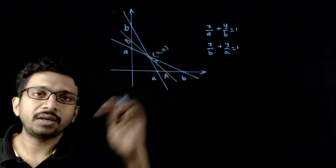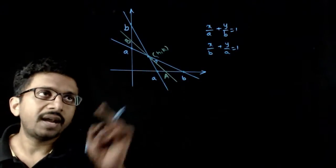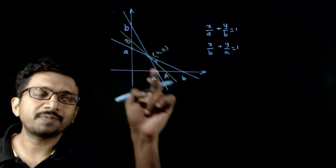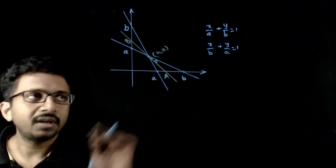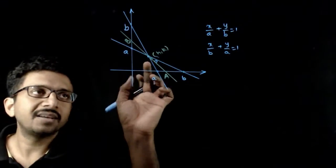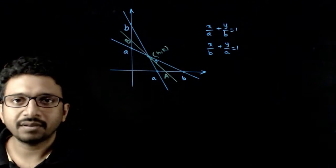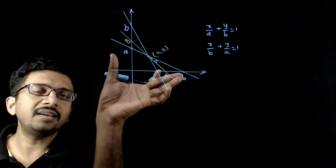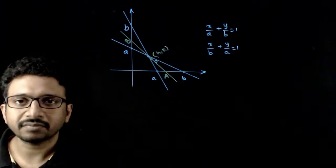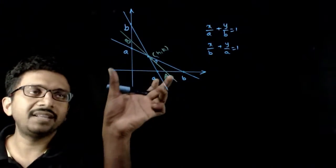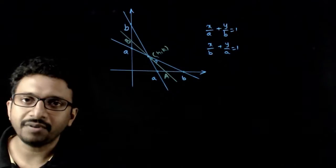Let these two be the two lines. You have a point of intersection P, and a variable line is passing through this point of intersection and it is meeting the coordinate axes at the points A and B. You are asked to find the locus of the midpoint of AB.